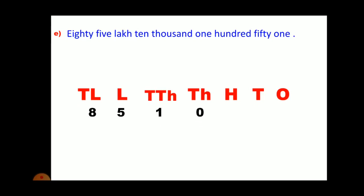At the place of 100, we will write 1. And we have 51. So we will write 51 in tens and ones place. Now, our next step is to put comma according to the periods.